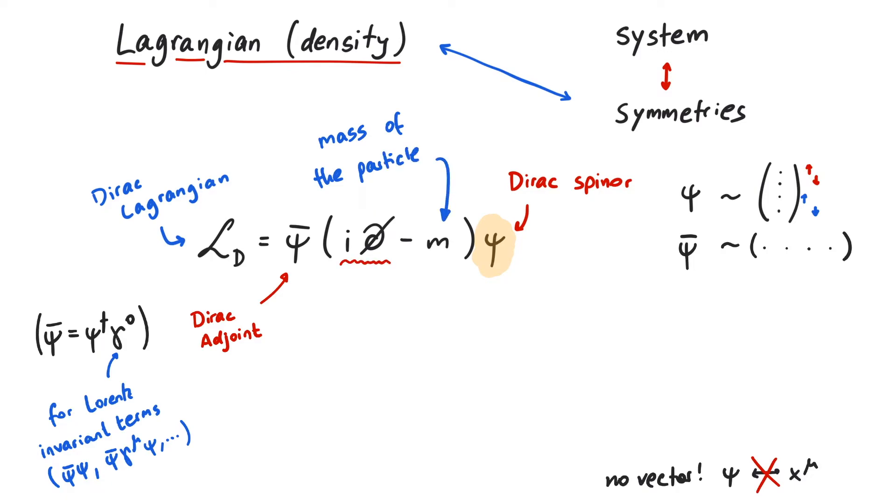Finally, i∂ slash. The slash notation was introduced by Richard Feynman and is a convenient way to abbreviate a term like gamma mu something mu. i times a derivative is simply the quantum mechanical way of expressing the momentum of a particle in position space, and the gamma matrices make sure that the energy of the particle follows the relativistic energy-momentum relation, as we showed in the previous video.